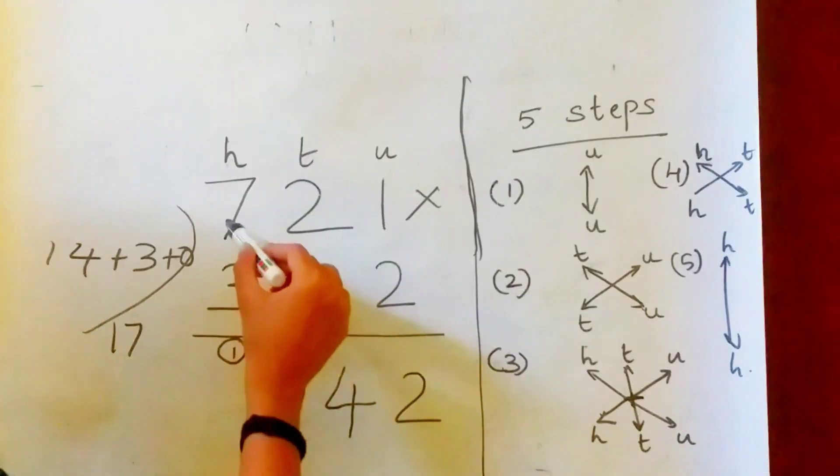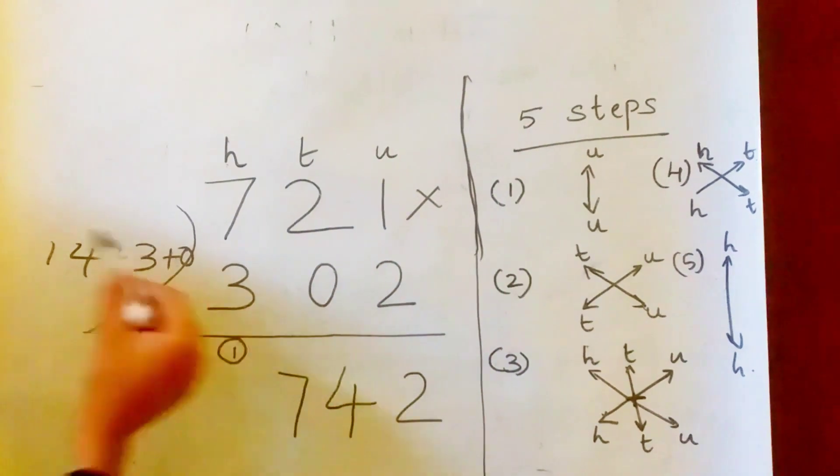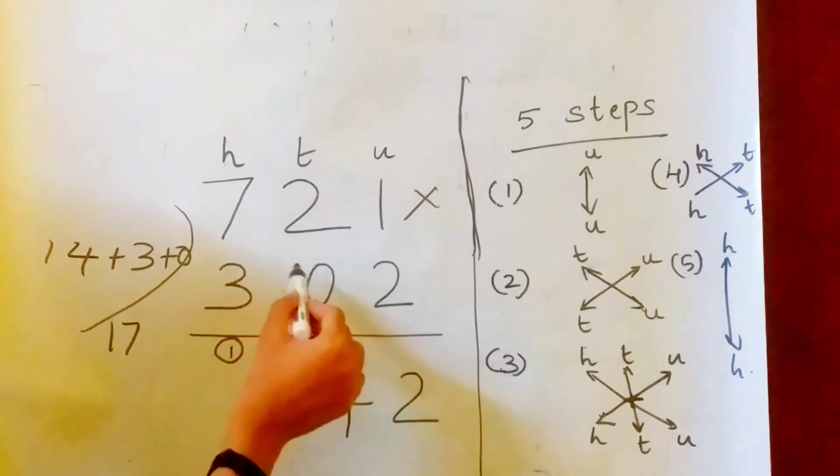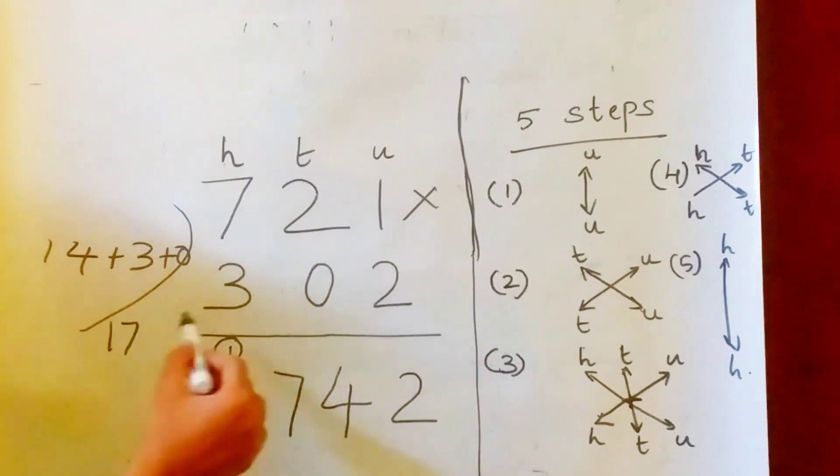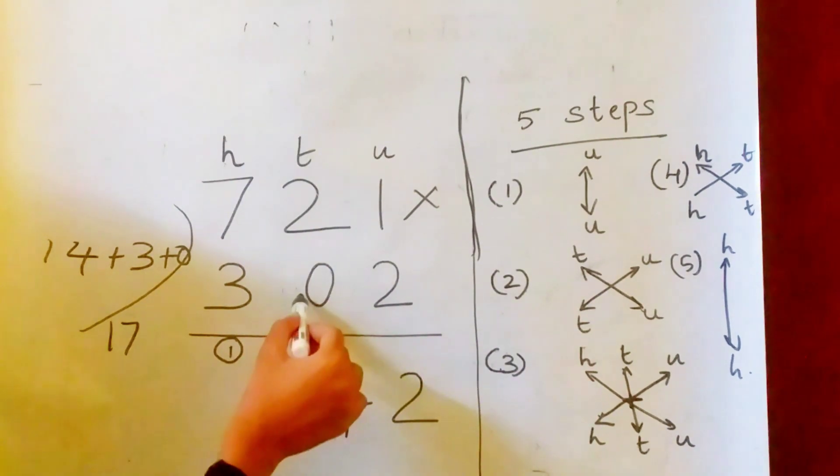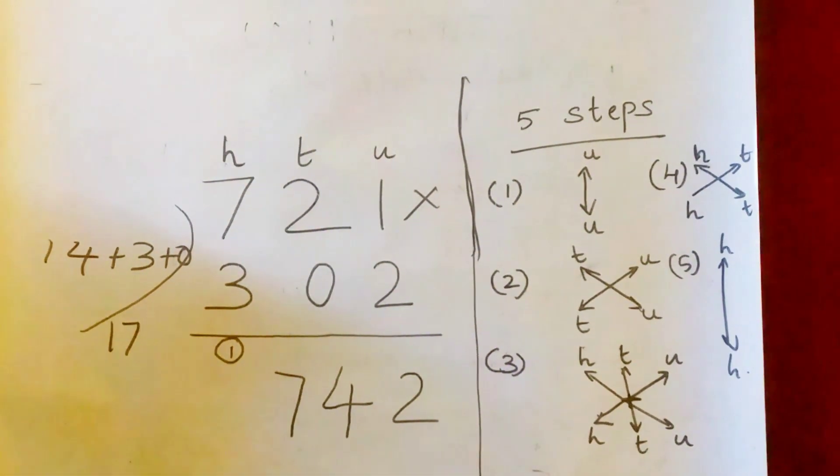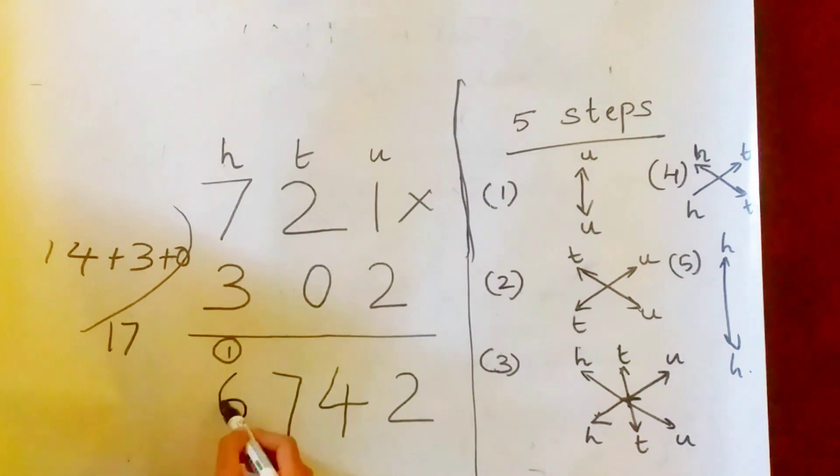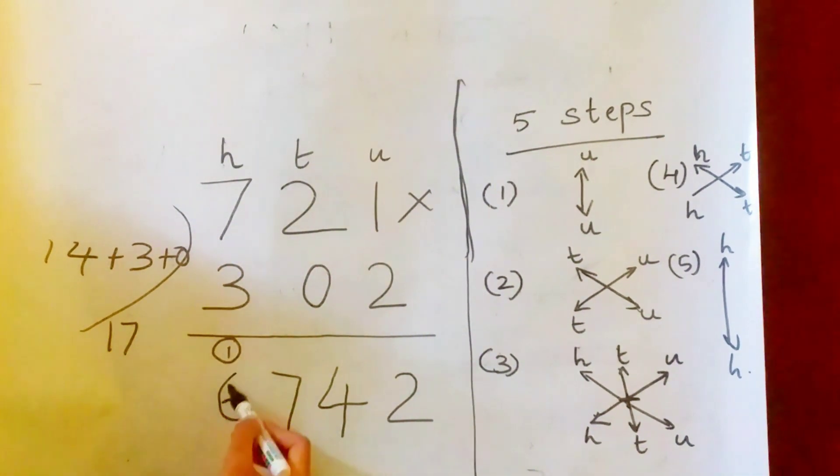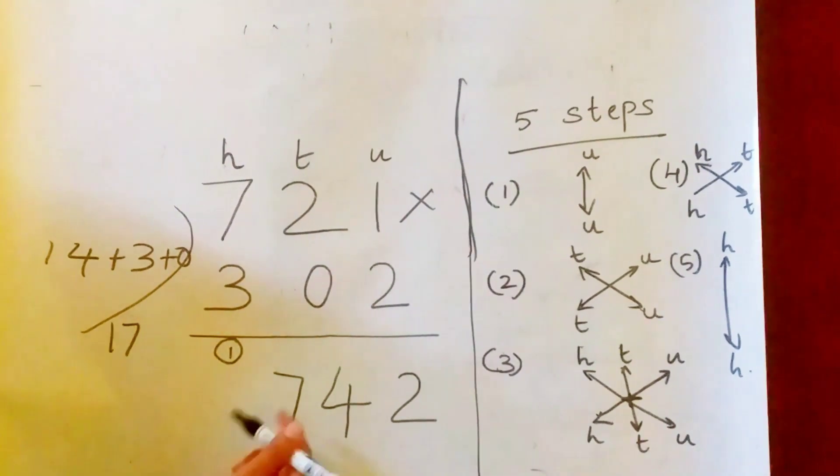Now what is the fourth step? H to T, T to H. 7 into 0 plus 2 into 3. 7 into 0, 0. Plus 2 into 3, 6. 0 plus 6, 6. But here we have a carry. So 6 plus 1, what is the answer? 7.